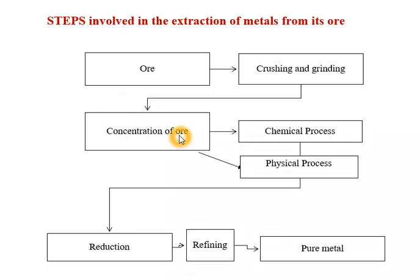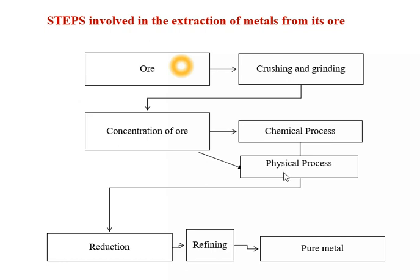Here you can see a flowchart of metal extraction from its ore to pure metal. From the earth's crust, by mining we obtain ore. It is further processed by crushing and grinding, where the size of the ore is reduced. After crushing and grinding, concentration of ore is done by chemical process and physical process. In the last video we already learnt concentration of ore by chemical process. Today we learn concentration of ore by physical process.